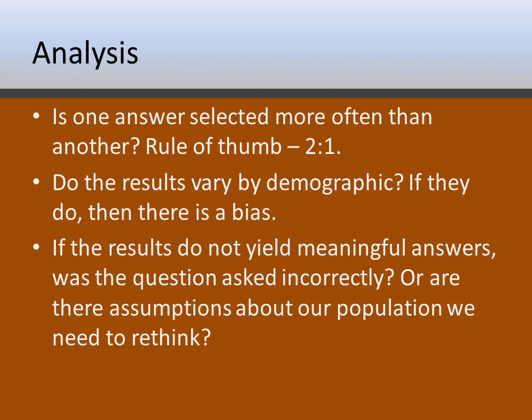We already talked about whether results vary by demographic — if they do, there's a bias you either accept or address. If results don't yield meaningful answers — say you have a multiple-choice question with four options and you get an equal spread across all four — you need to look at whether you asked the right question, whether you asked it properly, whether there's bias affecting it, or whether you made incorrect assumptions about your population. It's rare to get an equal spread on a multiple-choice question unless the answers are so similar there's no real distinction between them.